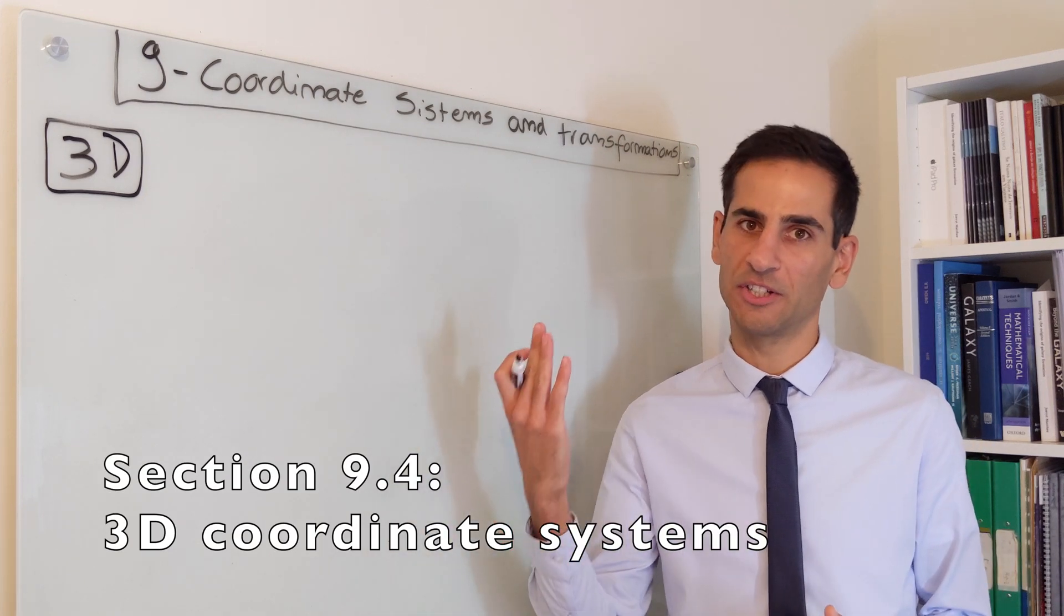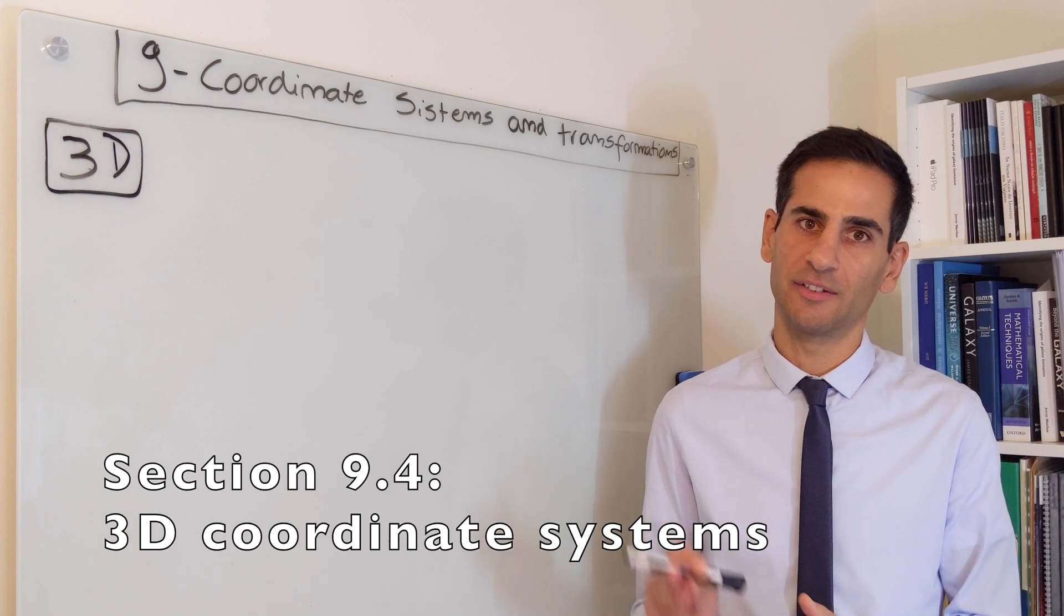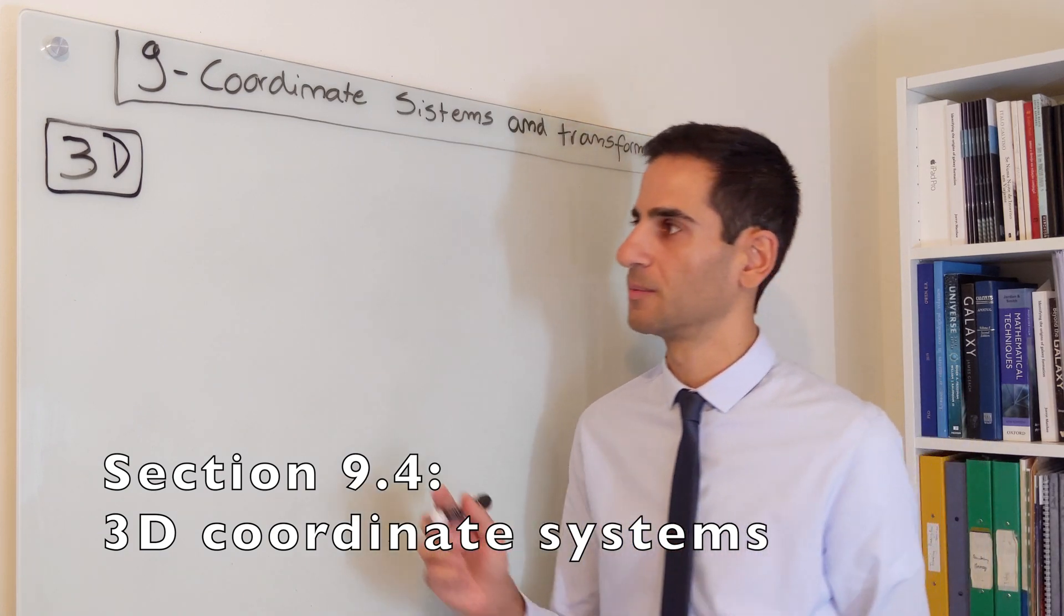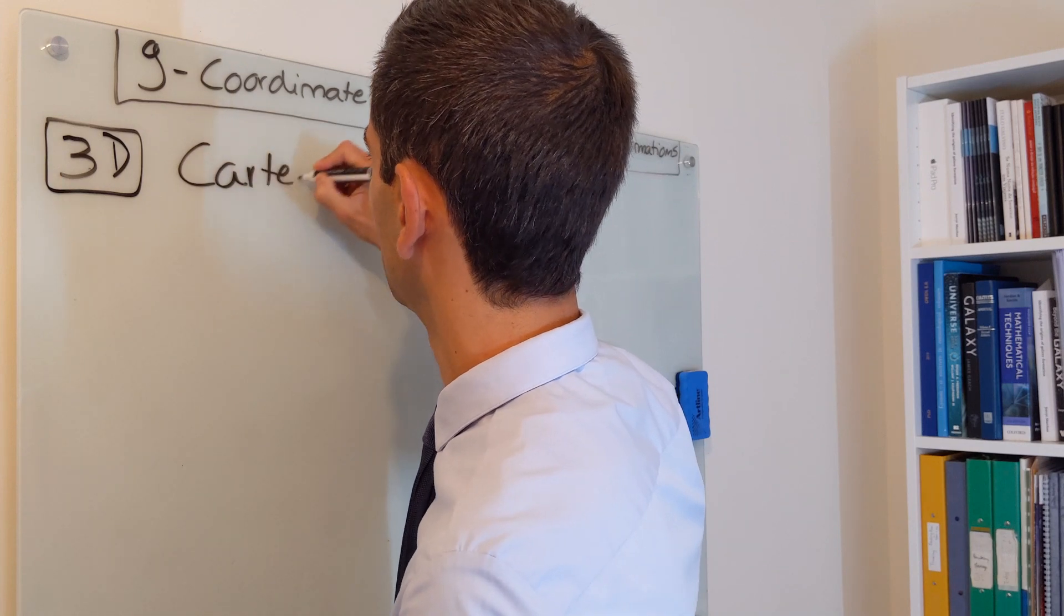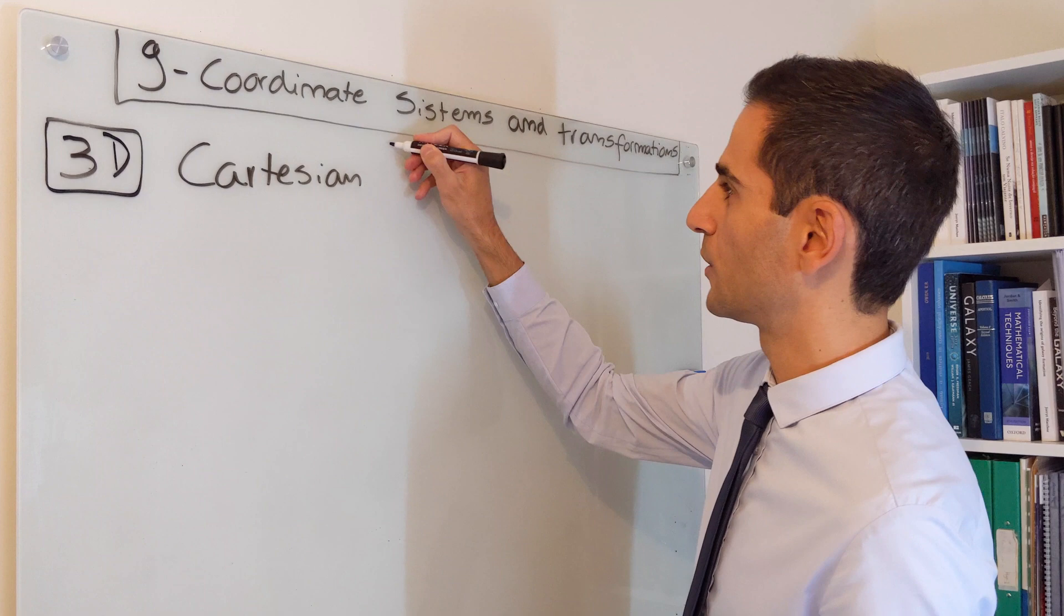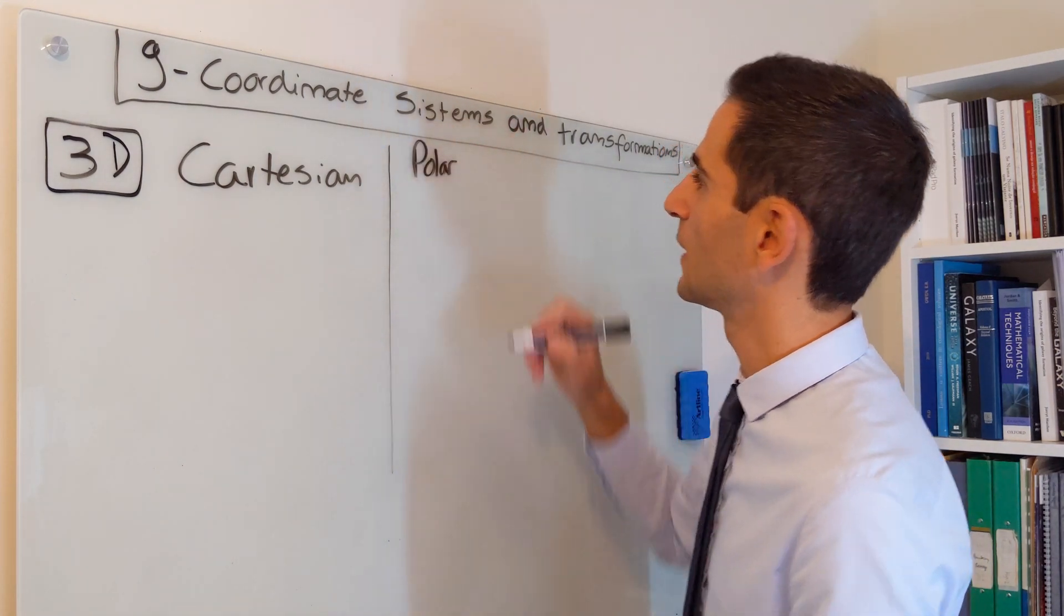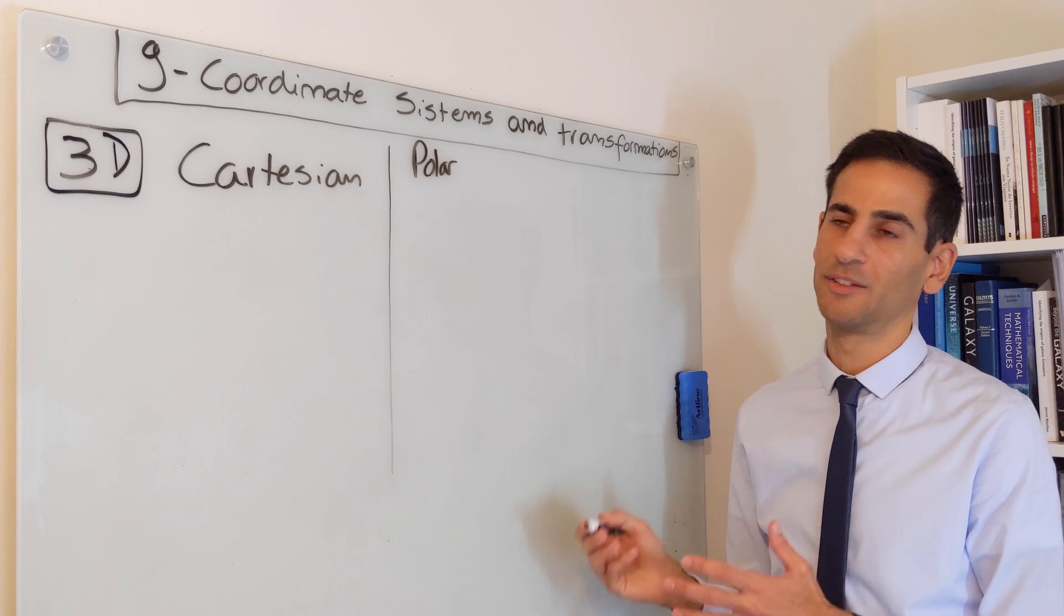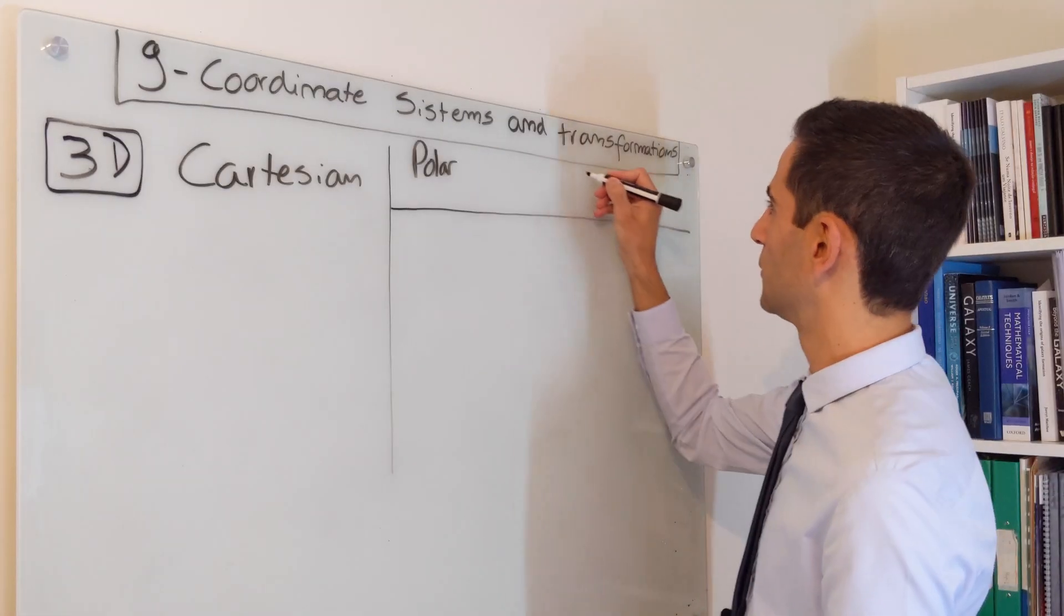We can now move one dimension from 2D to 3D and we're going to look at three major coordinate systems. One which should be very familiar to you, which is Cartesian, and then two coordinate systems which are polar that rely on extending 2D polar to 3D in two different ways.